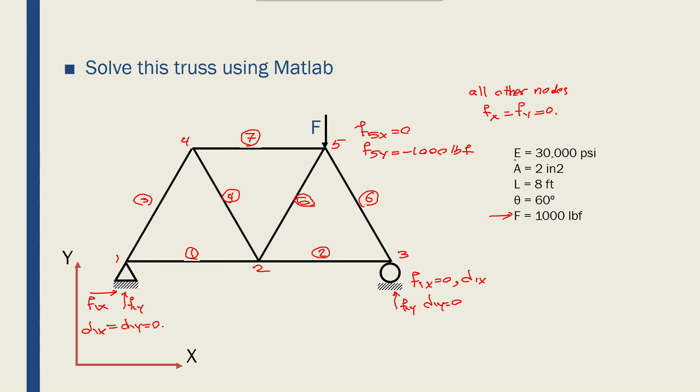And these are the properties we want to use for the analysis. Young's modulus, cross section area which should be inch squared, and length for all the elements is 8 feet. The angle is 60 degrees. And if I change the color of the pen to blue, what that means is that this angle is 60. This is also 60, but this is 120.